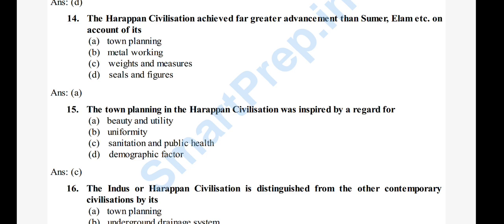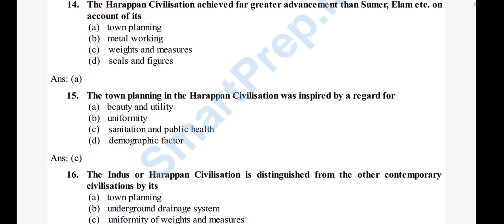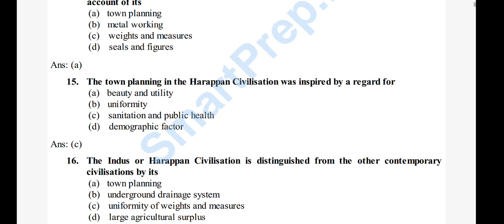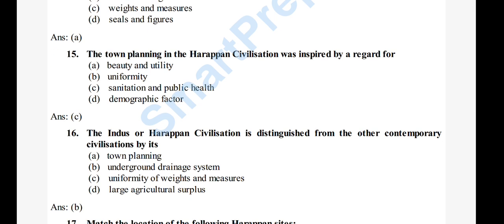Question 16: The Indus or Harappan civilization is distinguished from other contemporary civilizations by its — A) town planning, B) underground drainage system, C) uniformity of weights and measures, D) large agricultural surplus. The right answer is option B, underground drainage system. The underground drainage system is a unique feature of Harappan civilization.